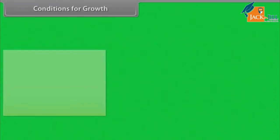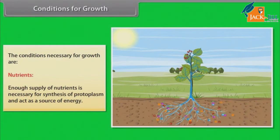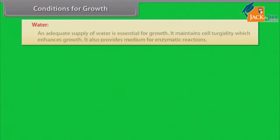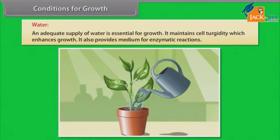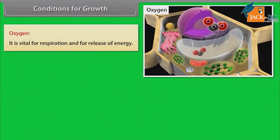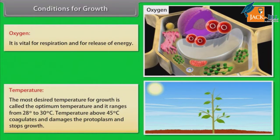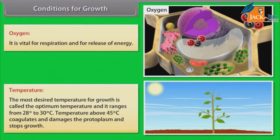Conditions for growth: The conditions necessary for growth are — Nutrients: enough supply of nutrients is necessary for synthesis of protoplasm and acts as a source of energy. Water: an adequate supply of water is essential for growth; it maintains cell turgidity which enhances growth and provides a medium for enzymatic reactions. Oxygen: it is vital for respiration and for release of energy. Temperature: the most desired temperature for growth is called the optimum temperature, ranging from 28°C to 30°C. Temperature above 45°C coagulates and damages the protoplasm and stops growth.